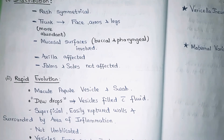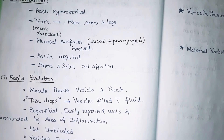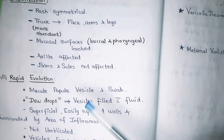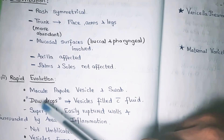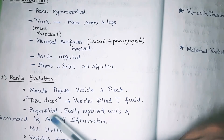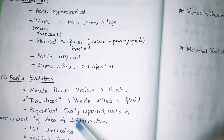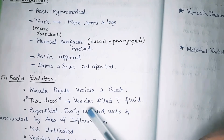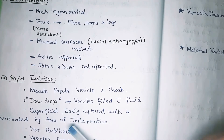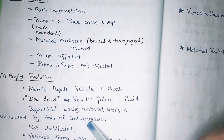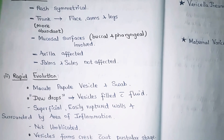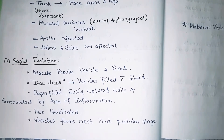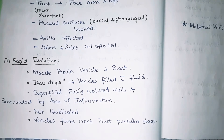There is rapid evolution of the rash through the following stages: macule, papule, vesicle, and scab. The vesicles filled with fluid appear as dew drops. These vesicles have superficial, easily ruptured walls and are surrounded by areas of inflammation. They are not umbilicated. In certain conditions, vesicles can form crusts without passing through a pustular stage.